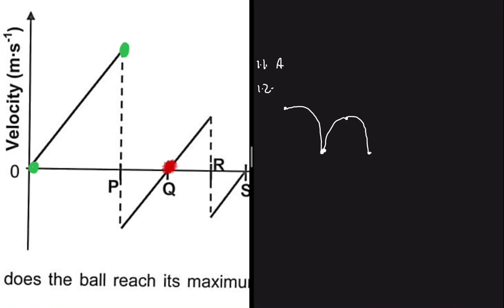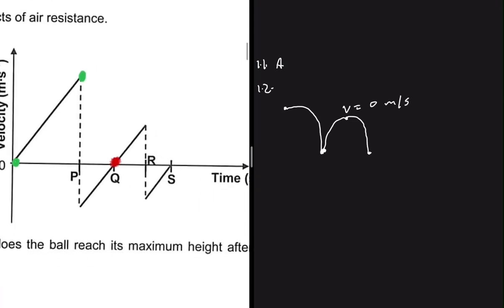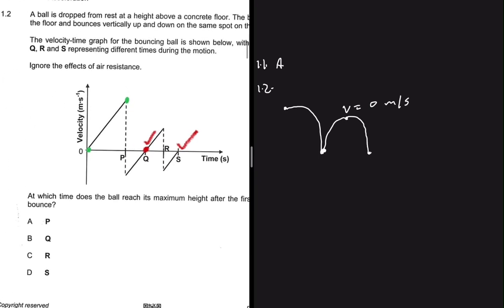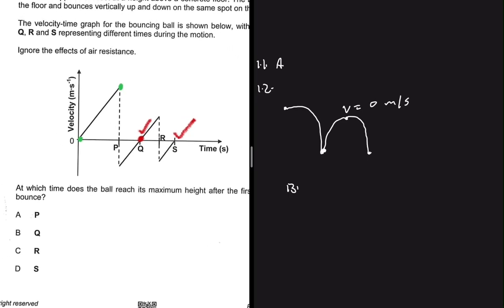We're looking for the maximum height after striking the ground for the first time. The maximum height is right at point Q, because we know that the velocity at maximum height equals zero meters per second. Point Q is the maximum height after the first bounce, and S would be the maximum height after the second bounce. So the answer to 1.2 is B.